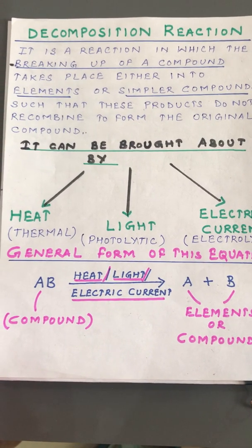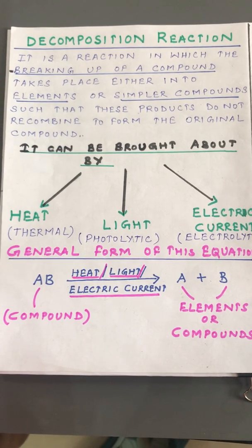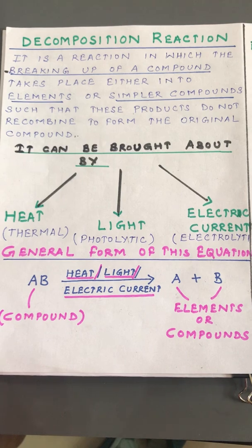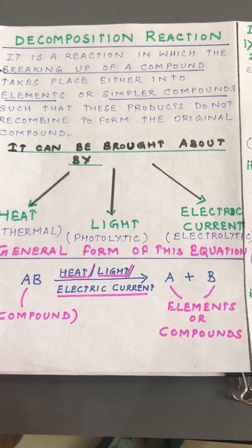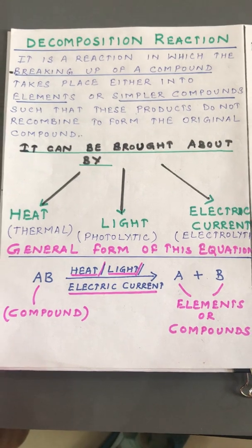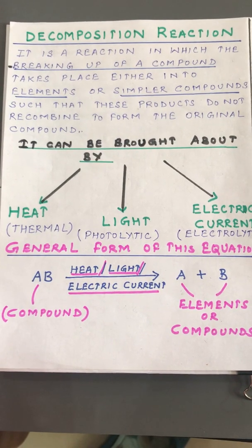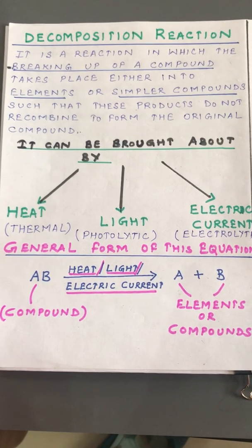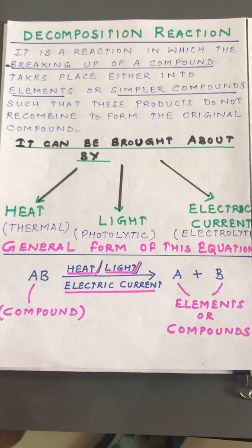Decomposition can be brought about by heat, light, or electric current. If brought about by heat, it is known as thermal decomposition; by light, it is photolytic decomposition; by electric current, it is electrolytic decomposition. The general form is: compound AB, in the presence of heat, light, or electric current, forms A and B, where A and B could be elements or compounds.